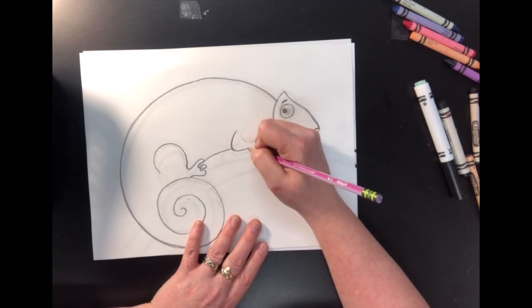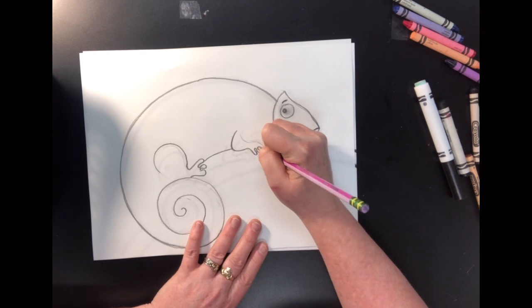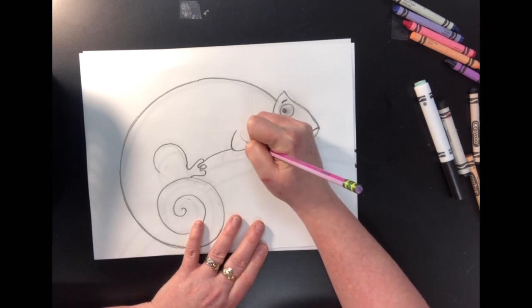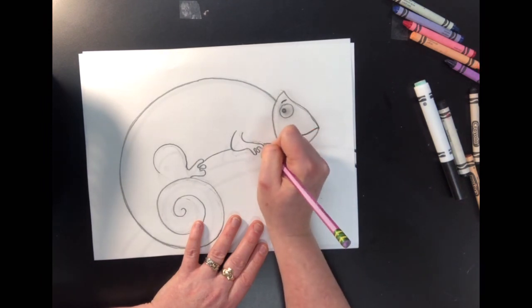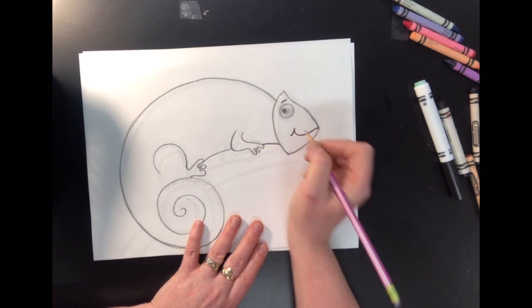And then this front foot gets three little wiggly toes and curves up just a little bit like that. And then you can finish it off by just connecting the underneath side of the neck.